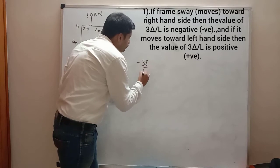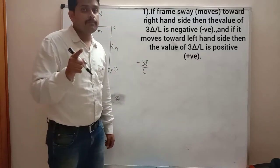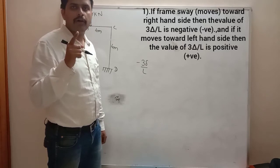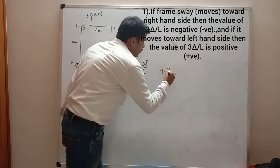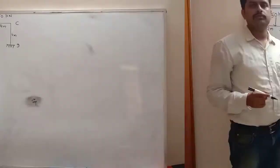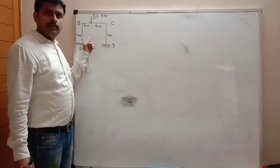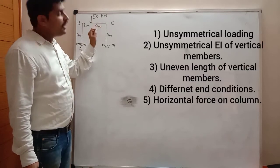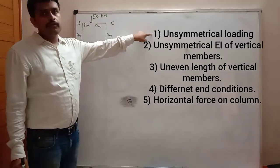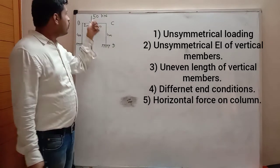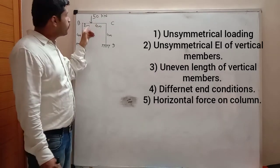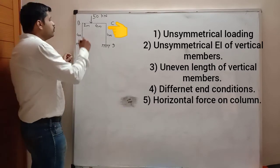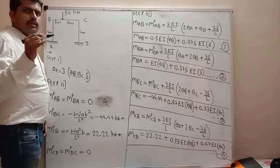If the frame moves towards the left hand side, then 3-delta upon L is considered as positive. In the given frame, there is an eccentric load of 50 kN on span BC. This eccentric load of 50 kN will produce sway in the frame, which is on the left hand side — so it moves towards the left hand side.